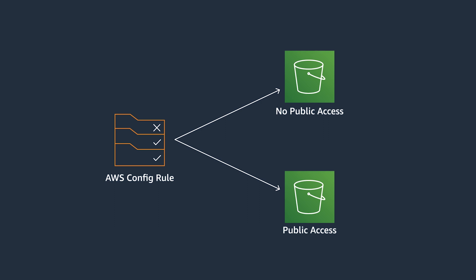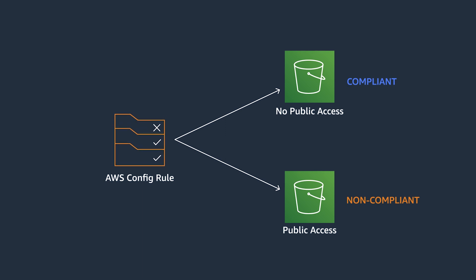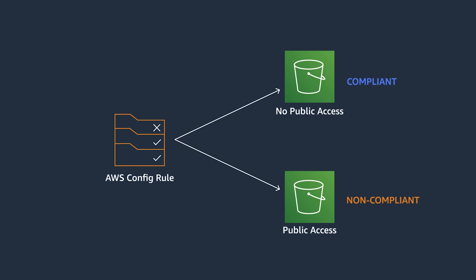If you have an S3 bucket that meets these requirements, it will be marked as compliant. Otherwise, your resource will be marked as non-compliant. As you can see in this example, Config will look at the S3 buckets in your environment anytime they're created or modified. Here, one bucket has public access and the other one doesn't. As a result, one will be marked as compliant and the other one as non-compliant.